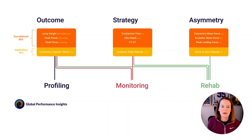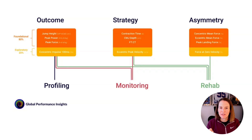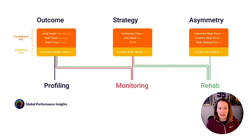Let's take a look at this framework as a whole. We have those three buckets of outcome, strategy, and asymmetry. With profiling in blue, we're focused on outcome measures to profile physical capacities. With monitoring in red, we go to both outcome and strategy measures, capturing not just outcomes but potential change in movement strategies. And then our rehab measures track outcome measures, strategy measures, and also asymmetry measures.